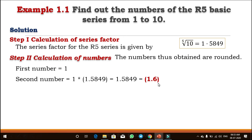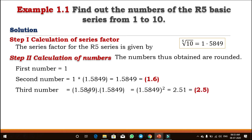For the third number, we take the second number and multiply it again by the series factor. So the third number is 1.5849 × 1.5849, which is its square. We get approximately 2.51, and rounding off we take 2.5. So this is the third number.